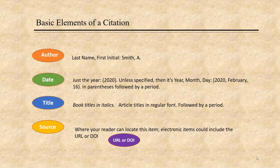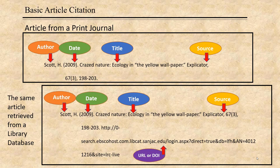Once you know these building blocks, building an APA citation is easy — you just plug the blocks into the pattern where APA tells you to. Let's start with a basic article citation, since you're going to be citing a lot of articles. You start with the author, last name first, followed by a comma, then first initial, period. Then the date of the article in parentheses, followed by a period.